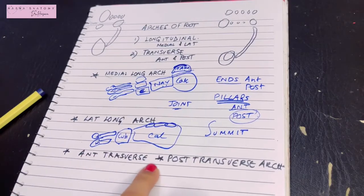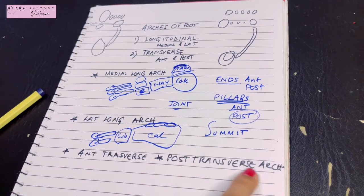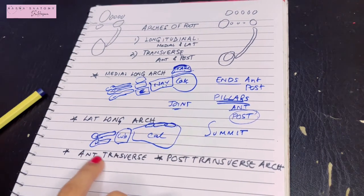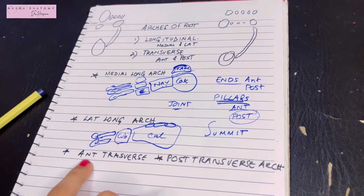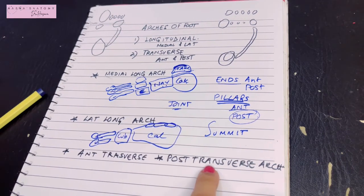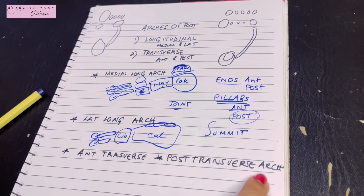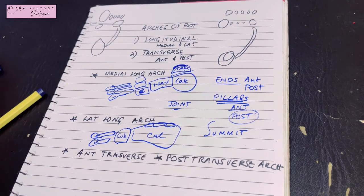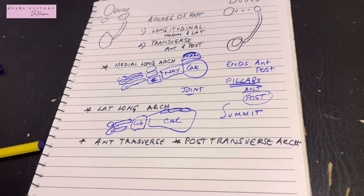In summary, the anterior transverse arch is formed by all the metatarsal bones, while the posterior transverse arch is formed by the metatarsal bases and tarsal bones. The anterior transverse arch has two ends — the first and fifth metatarsals — while the posterior transverse arch has only a lateral end resting on the ground, being incomplete medially. In the next video, I'll discuss the various supports of the arches of the foot. Thank you for watching.